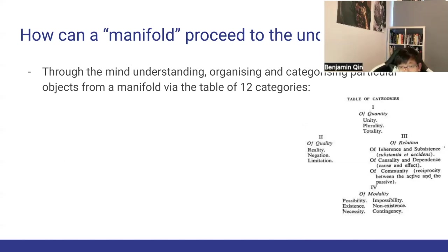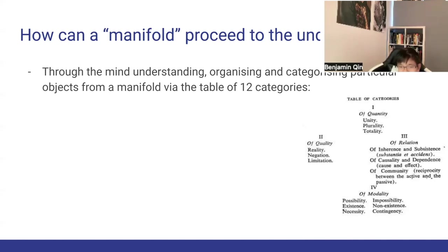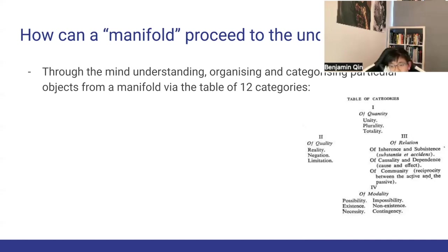The 12 categories can be separated into four groups: quantity, quality, relation, and modality. Quantity is quite self-evident — it's how much of something there is. Quality concerns whether something has specific properties, related to the predicates of the concept. Relation is how the object relates to other objects. Modality concerns the logical conditions of the object.